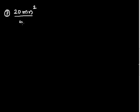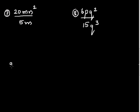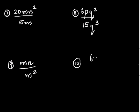Try to do these yourself: Question 8 is 20mn squared divided by 5m. Question 9 is 6pq squared divided by 15q cubed. Question 10 is mn divided by m squared. And the final question is 6x squared y divided by 3y. Pause the video and try to do these yourself.